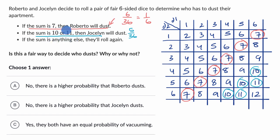But on that second roll, there's a higher probability that Roberto will dust than Jocelyn will dust. So in general, this is not fair. There's a higher probability that Roberto dusts.